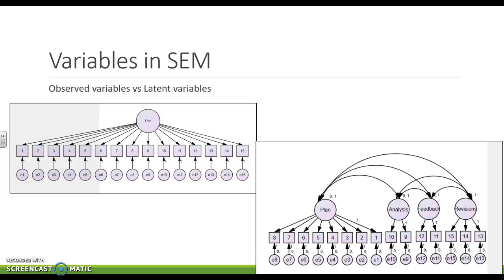So let's look at a few examples. Here I have a circle. So this is a latent variable with 15 indicator variables, 15 observed items that are going to lead to this bigger idea. You will also notice that there are error terms, so little circles, on each observed variable. So each indicator item has its own error term.